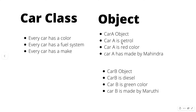The actual value is defined by the object. Car A is petrol. Car A is red in color. Car A is made by Mahindra. The attributes and objects are similar and different.